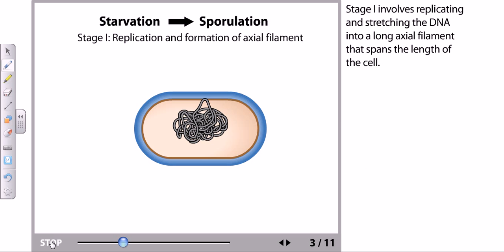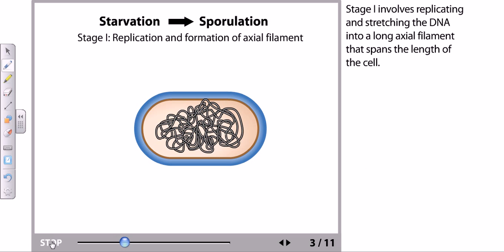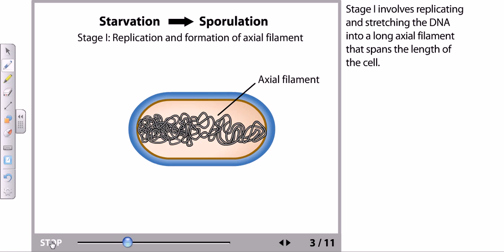Stage 1 involves the replication and stretching out of the DNA into a long axial filament structure that spans the length of the cell. Now in this case I must tell you something important about the topic here.